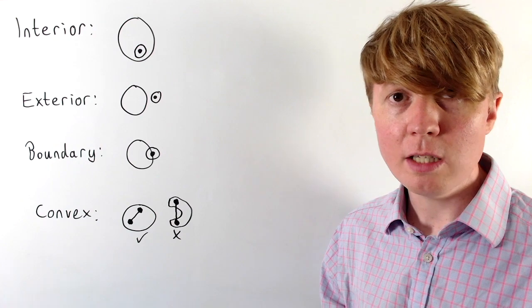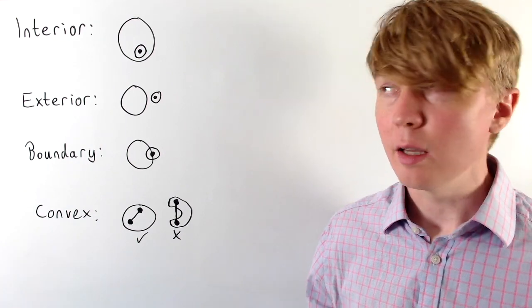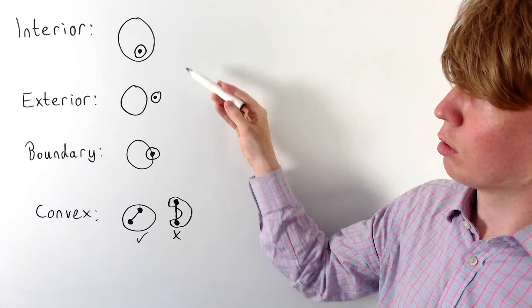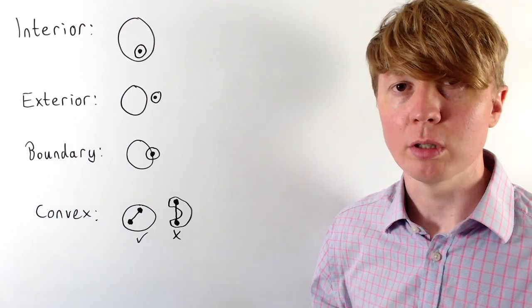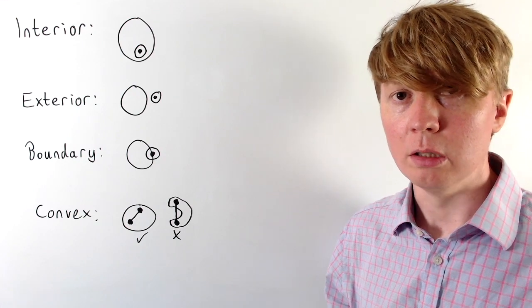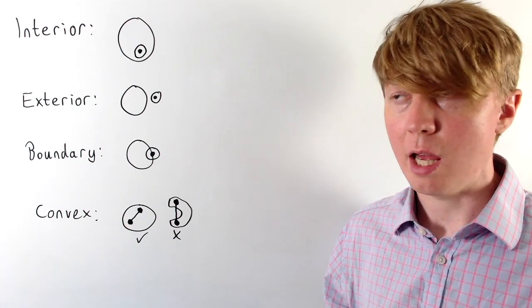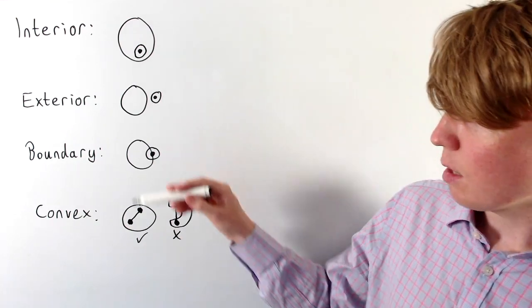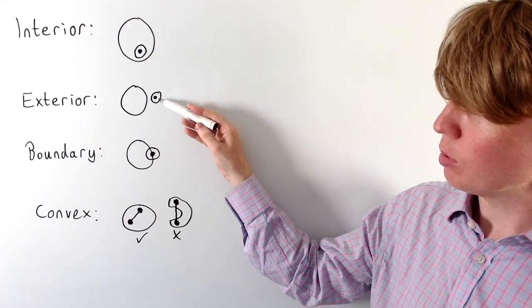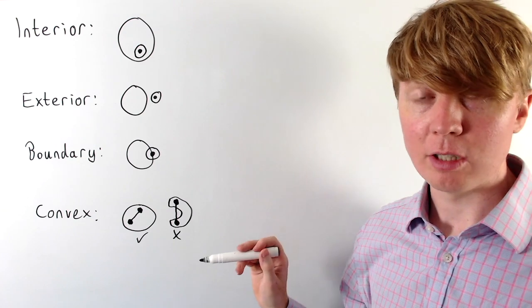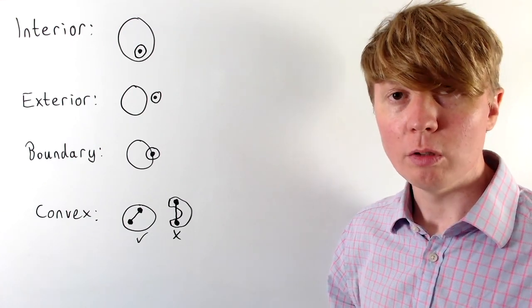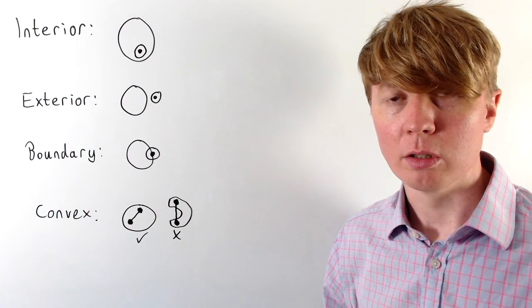A point is an interior point of a set if there's always some ball or circle you can draw around that point with a small enough radius so that all of the points in that circle are contained within your set. Similarly, an exterior point is one that doesn't belong to the set, but you can draw a ball around it with a small enough radius so all of the points in that ball also don't belong to your set.